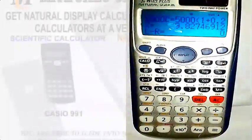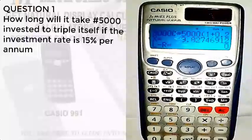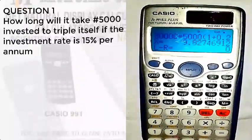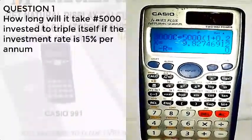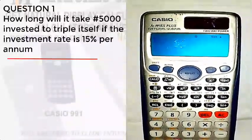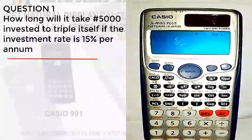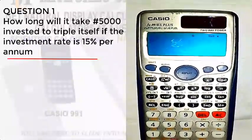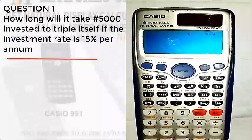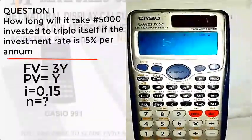Now we'll move to the next question. It says: how long will it take an investment to triple itself if the investment rate is 15 percent per annum? Based on this question, we are not given the future value, but we know the future value is three times the present value. And also we're not given the present value, so because of that we represent the present value with Y.